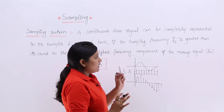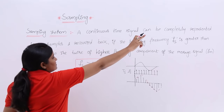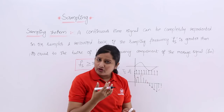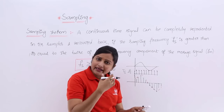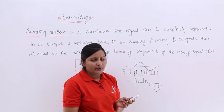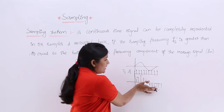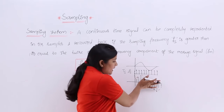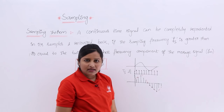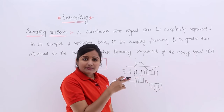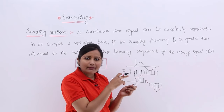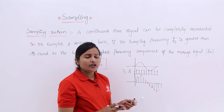In the theorem statement: a continuous time signal can be completely represented into its samples — not partially, but completely. Any continuous signal can be completely represented in its samples and recovered back. To do all this — to completely represent and to recover back perfectly — we need to follow a condition.